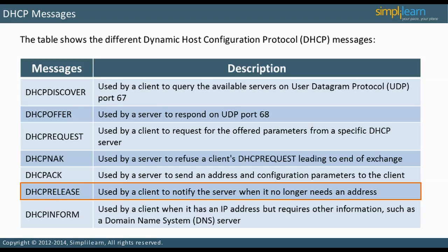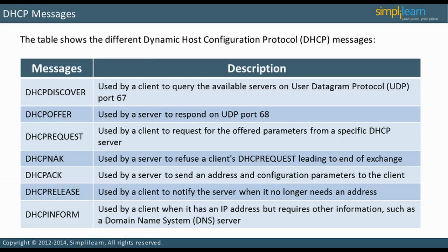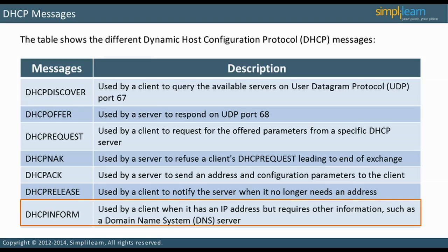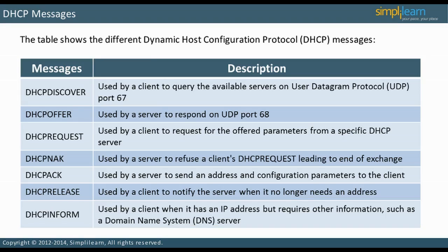When the client no longer needs an address, the server is notified with a release message — DHCP Release. A DHCP server provides more than just an IP address. A DHCP INFORM message occurs when a client already has an IP address but requires other information, such as a DNS server.